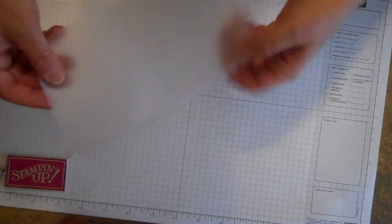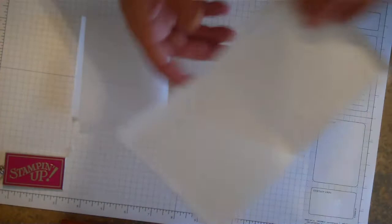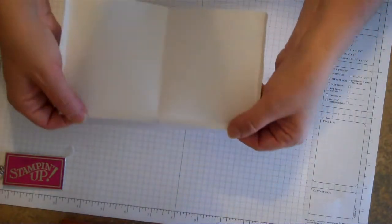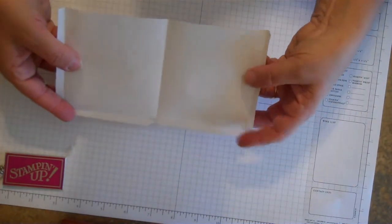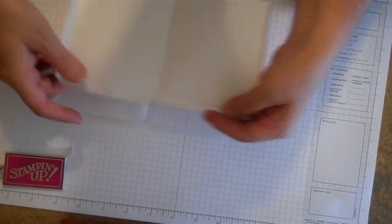So what you're going to have is something that looks like this. I'm going to show you on the white piece of paper, it might be a little easier to see. You're going to have your score lines, you're going to cut your corners and then you're going to cut a notch in the center.